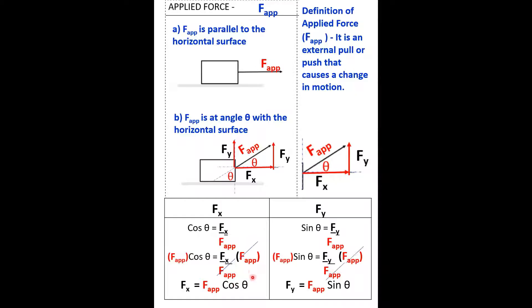What we have left, flipping the equation, is: F-X is equal to F-app cosine of this angle, and F-Y is F-app sine of this angle.